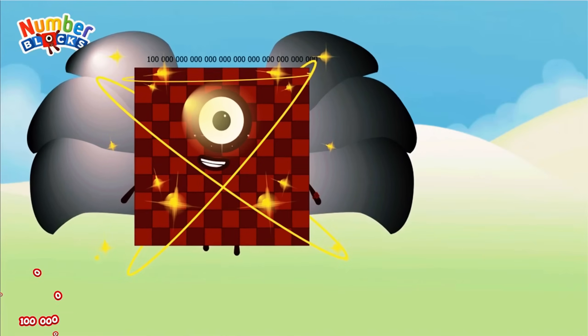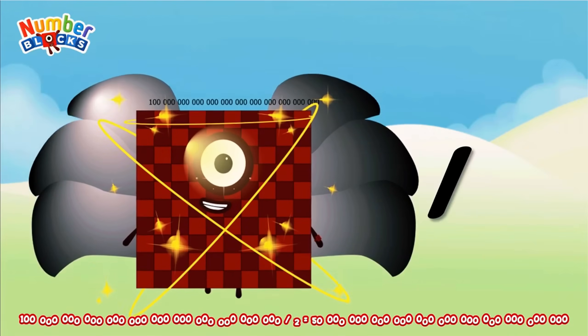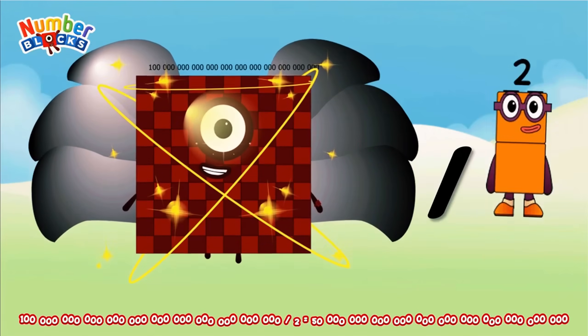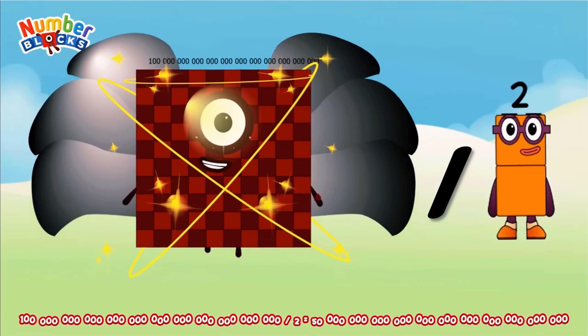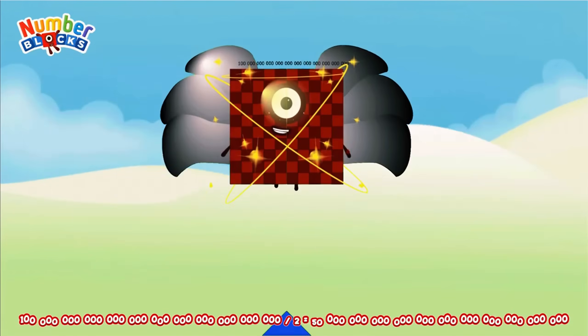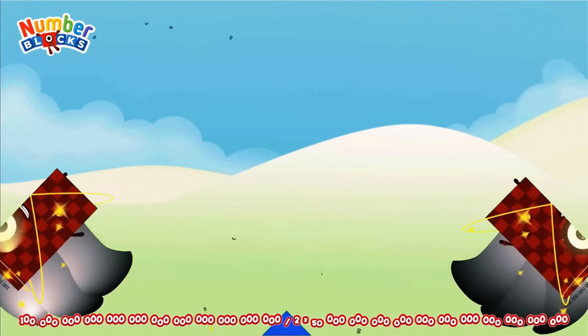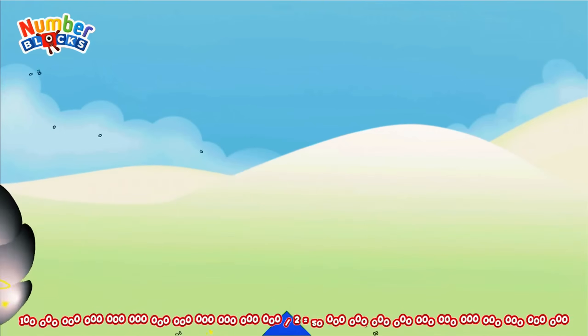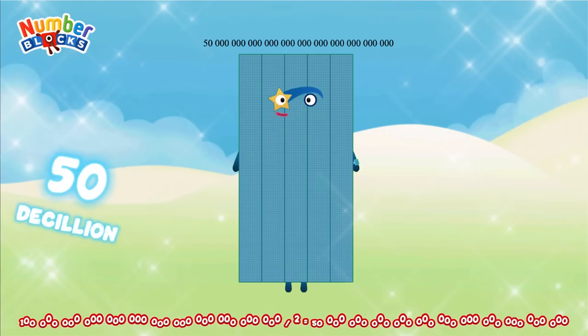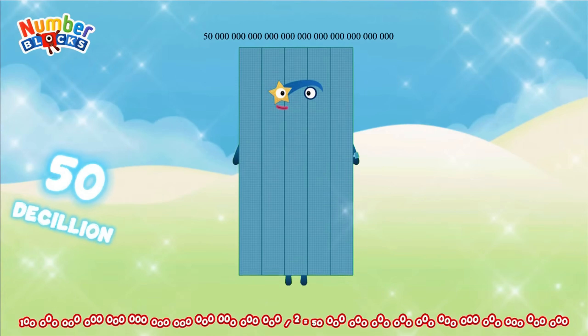One hundred decillion divided by two equals fifty decillion.